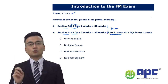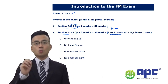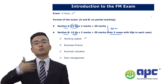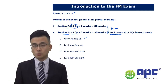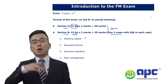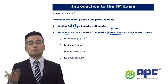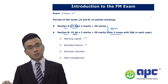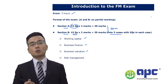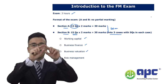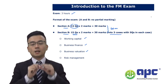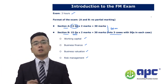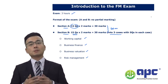In Section B, the examiner has his own preference for what areas to test. Questions may come from working capital — inventory management, cash management, payables management, and receivables management. In each exam it's fairly consistent; for example, if receivables management was tested in the last sitting, it's highly unlikely to come up again. Business finance and business valuation may also appear as Section B cases, with five independent questions per case. Foreign exchange rate risk management may also be tested in Section B.